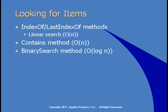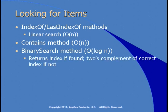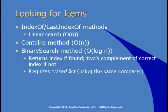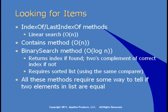The BinarySearch method, which is O(log N) base 2, means that as you increase the size of the list, your search doesn't necessarily slow down very much. It returns the index of the item if found, or the two's complement of the correct index if it's not. This requires a sorted list, and the sorted list must be sorted using the same comparer as you're using for BinarySearch. All these methods require items to implement the IEquatable interface in order to find an item in the list.